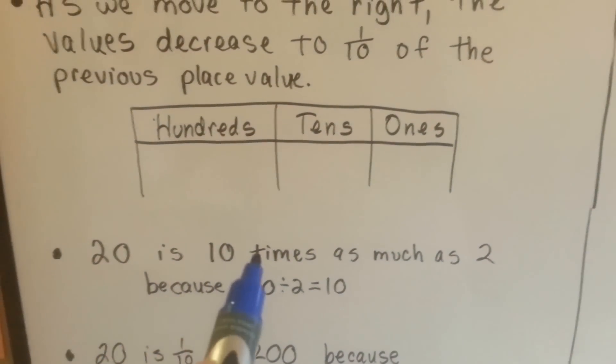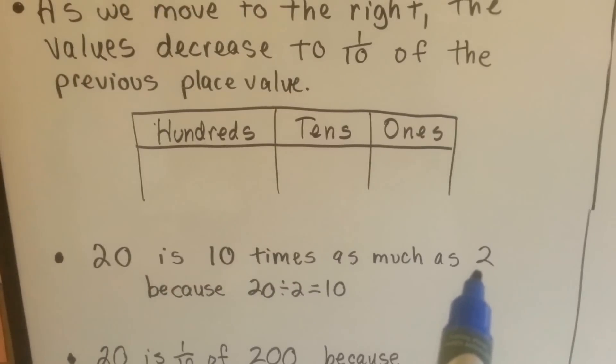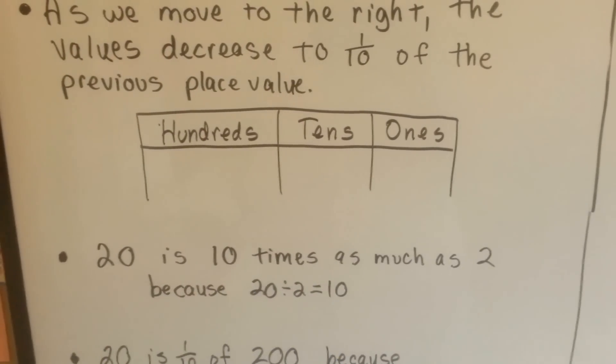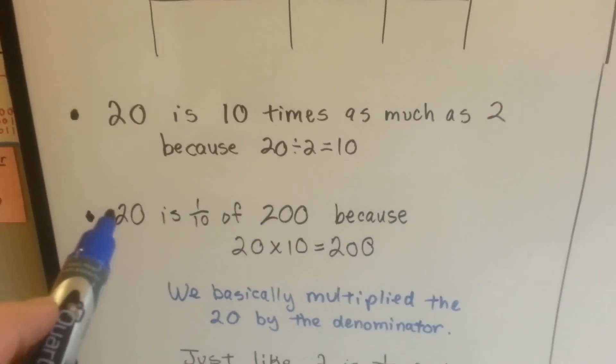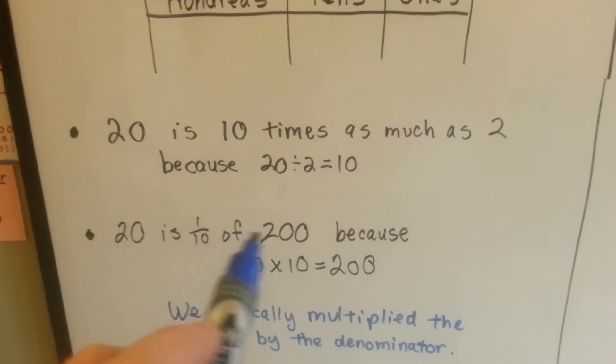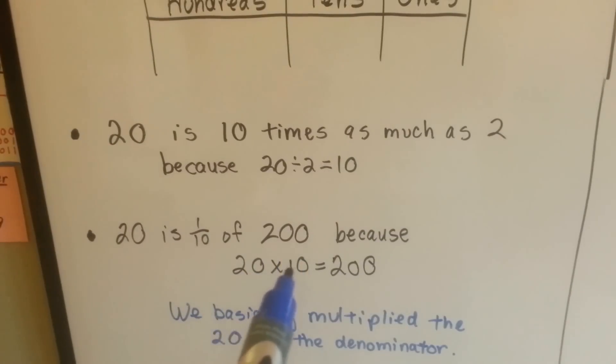20 is 10 times as much as a 2 because 20 divided by 2 equals 10. See? 10 times 2 is 20. And 20 is 1 tenth of 200 because 20 times 10 is 200.